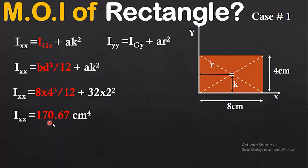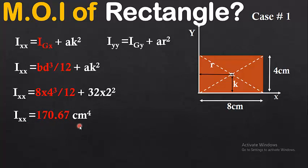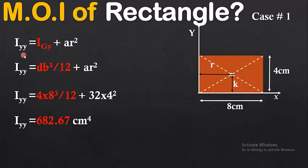We get Ixx = 170.67 cm⁴. The unit of moment of inertia is cm⁴, as discussed in part 1 of this series. So the moment of inertia about the x-axis for case one is 170.67 cm⁴.